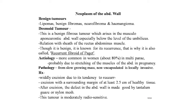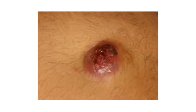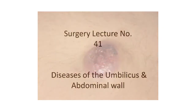Etiology of desmoid tumor: more common in women (about 80 percent), multipara, probably due to stretching of abdominal muscles in pregnancy. Pathology: slow-growing, non-encapsulated, locally invasive mass. Treatment: wide excision due to its tendency to recur, with at least 2.5 cm margins of healthy tissue. After excision, the defect in the abdominal wall is repaired with tantalum gauze and nylon mesh. The tumor is moderately radio-sensitive. Images of the desmoid tumor are shown on screen.